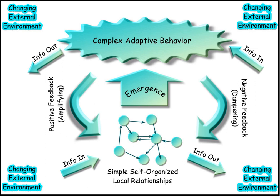Nervous system: collecting, transferring and processing information with brain, spinal cord, peripheral nervous system and sense organs. Sensory systems: visual system, auditory system, olfactory system, gustatory system, somatosensory system, vestibular system.